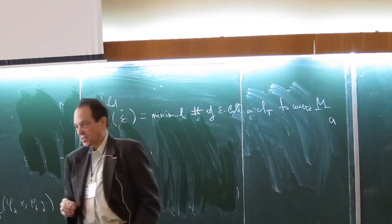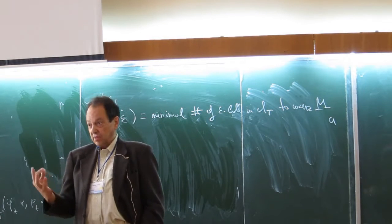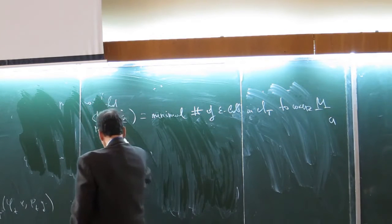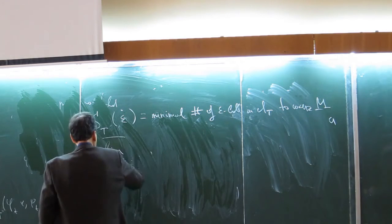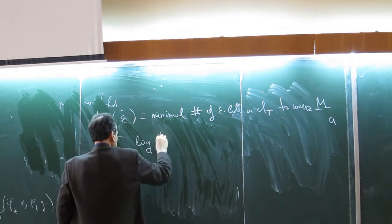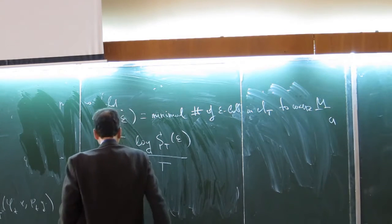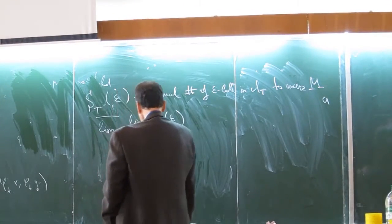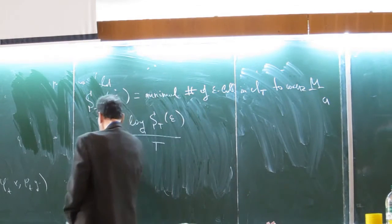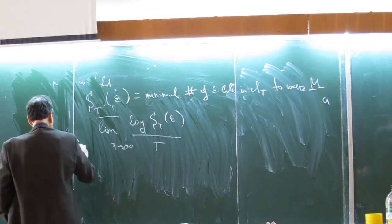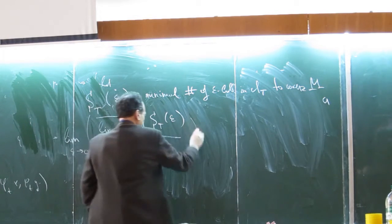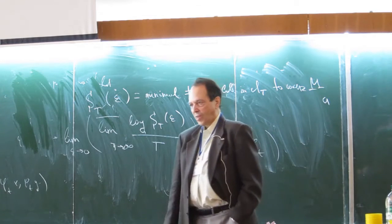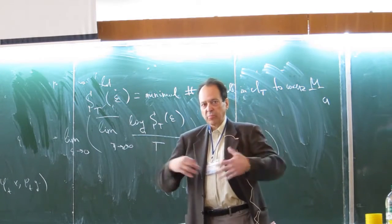So s_t of epsilon is the minimum number of epsilon balls in the metric d_t needed to cover the space. And then, it's a simple exercise that if your system is given by differential equations, this supremum over t of 1/t log s_t(epsilon) is always finite for any epsilon, and then we take the limit as epsilon goes to zero. And this is what's called topological entropy of your flow.